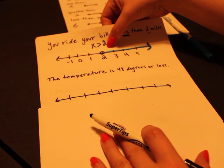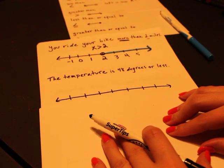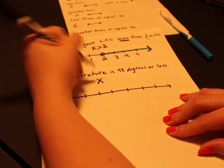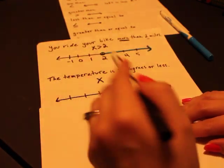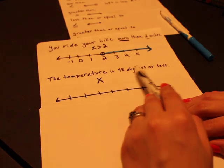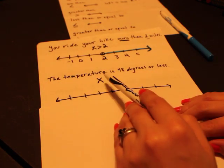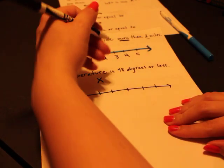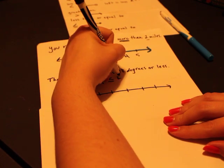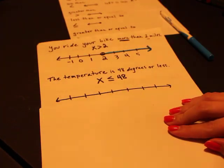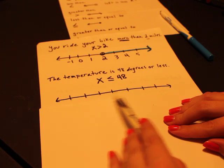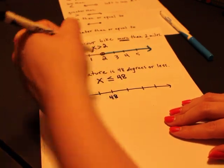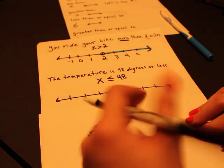We've got the temperature is 48 degrees or less. So we'll call our variable x—I'm just going to call them all x for simplicity. The temperature is 48 degrees or less, so that means our temperature has got to be 48 or under that. So x is less than or equal to 48. Less than or equal to. Now we're going to go—again, just start in the middle, doesn't have to be complicated.